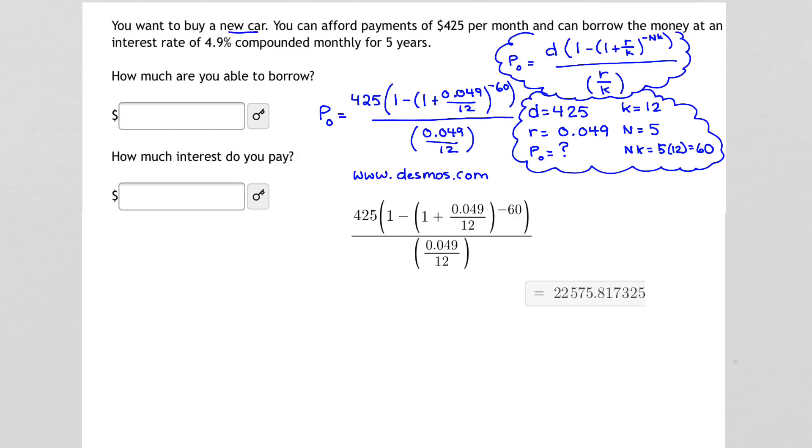Desmos gives me the following, that the amount we're allowed to borrow, or that we're able to borrow, is calculated out to be $22,575.82. Right here. That's the amount that I put in my first box. That's a pretty good amount for a new car.